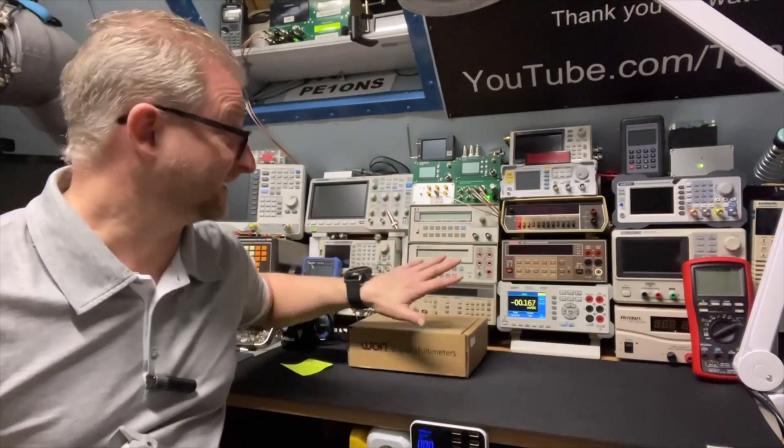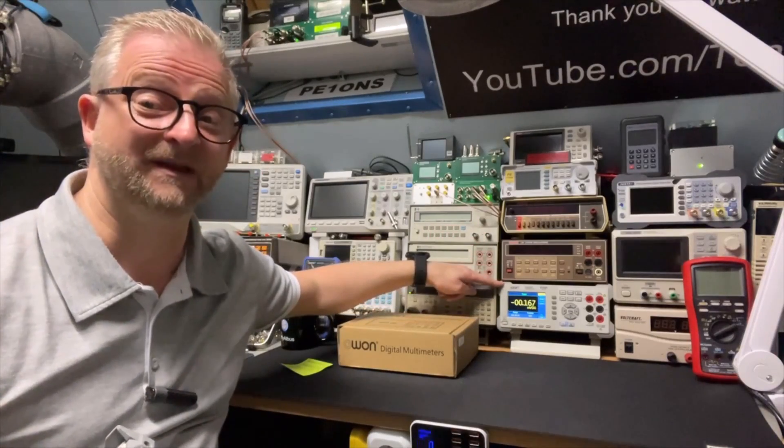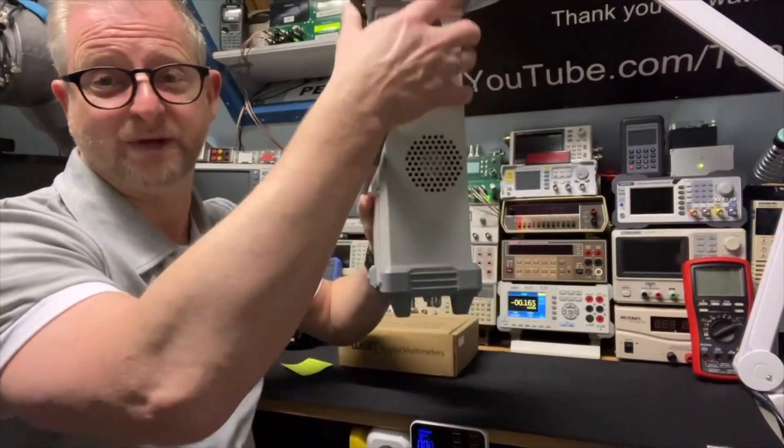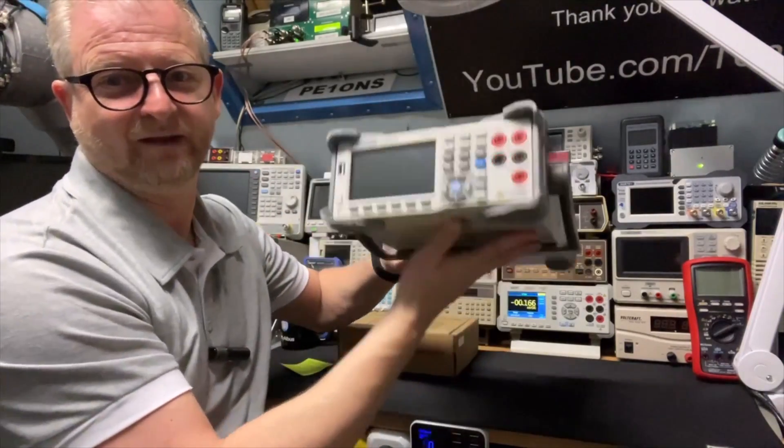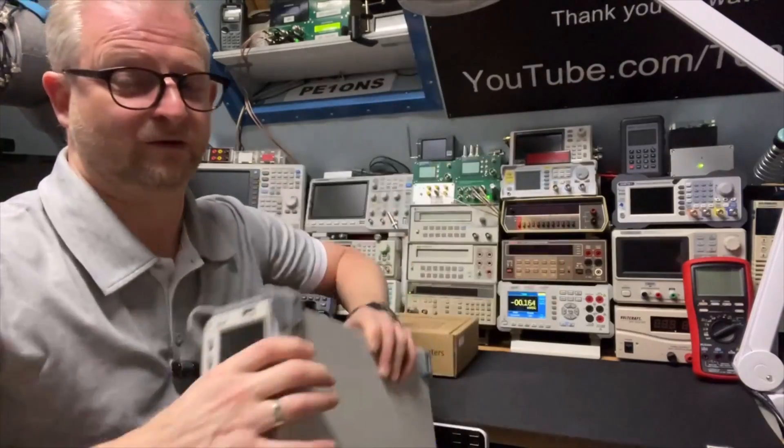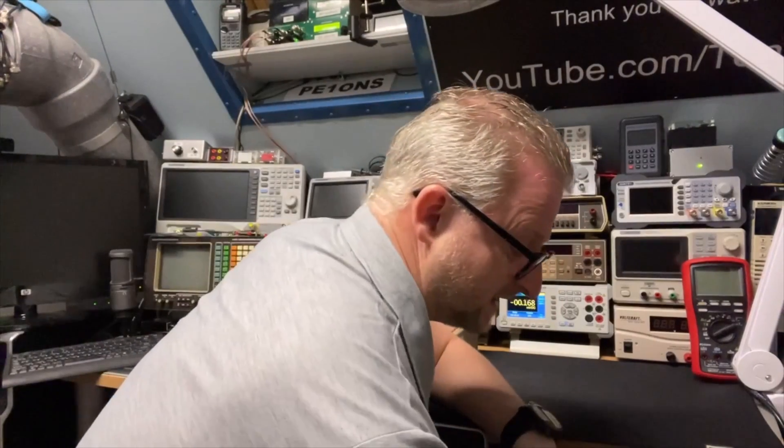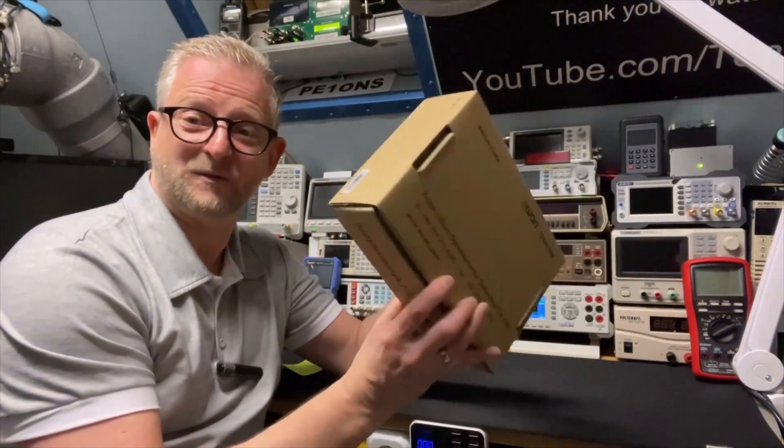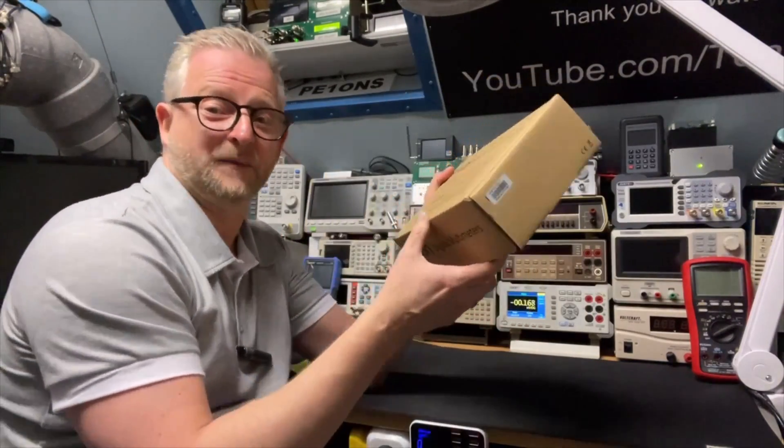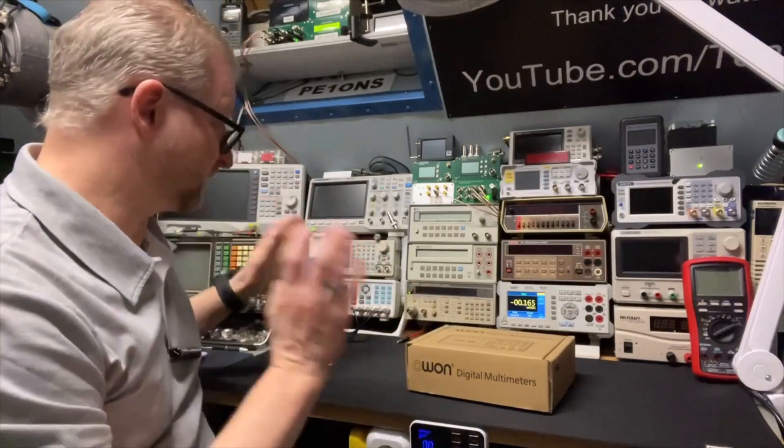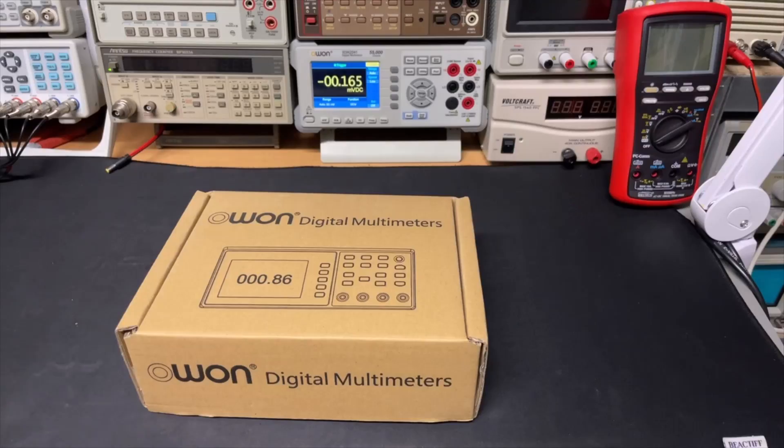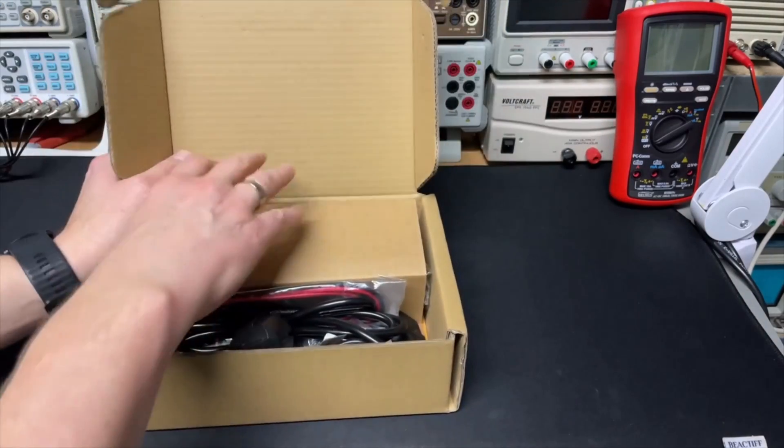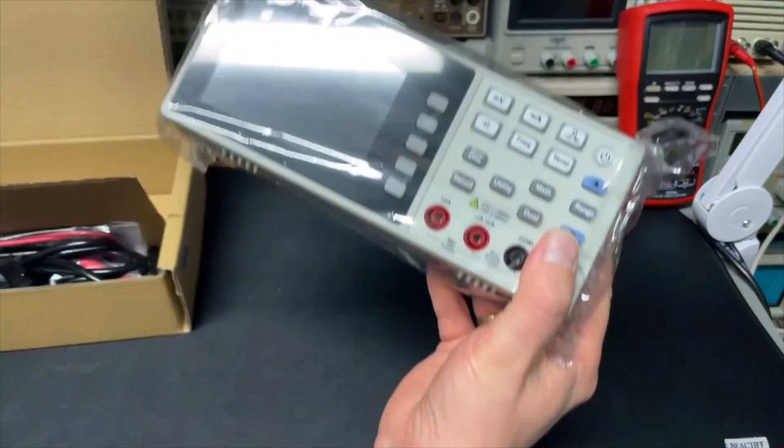Let's start with the main difference between the 2041 and the 1041. First of all is the size. As you can see, this is a real benchtop DMM multimeter - it is big, it has a whole casing behind it. OWON now made this 1041 that fits in this box. Let's have a quick look and put them side by side.